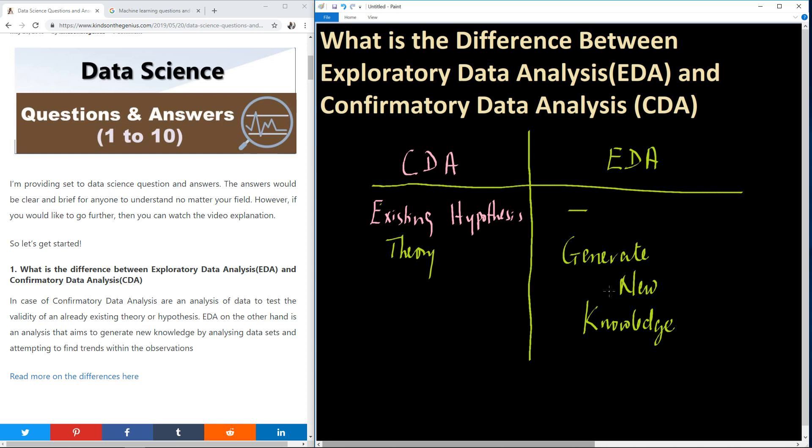What is the relationship between this category and this category, or what is the trend that is found in this data? In case of Confirmatory Data Analysis, we are simply trying to confirm or test an existing hypothesis. That is the difference.